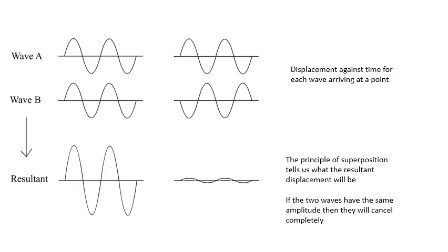What does that mean? There's wave A at the top and wave B below it, and these graphs are displacement against time at a particular point. If wave A and wave B add together, we can use the principle of superposition to work out what the resultant will be. On the first example on the left, we get a big resultant because wave A and wave B are arriving in phase. On the right, wave A and wave B are in antiphase — 180 degrees or pi radians out of phase — so they will interfere destructively. If they have exactly the same amplitude, they will completely cancel each other out.